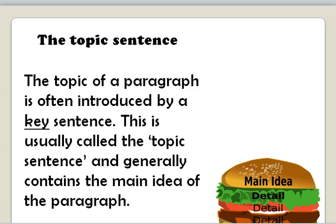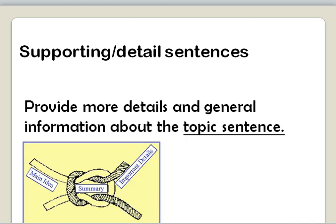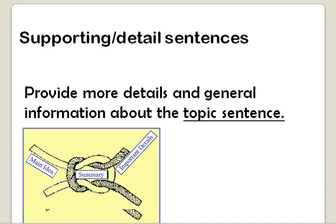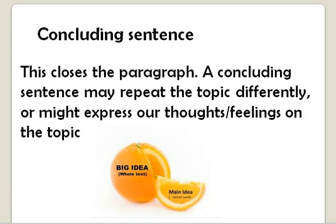The topic of a paragraph is often introduced by a key sentence, and we call that in English the topic sentence. What that usually contains is the main idea of the paragraph — what you're going to talk about in that paragraph. That's followed up with some supporting or detailed sentences, which provide a few more details and sometimes just a bit of general information about the topic sentence. Then you've got your concluding sentence, and this kind of closes the paragraph. It might repeat the topic in a different way, or it might express a personal viewpoint.